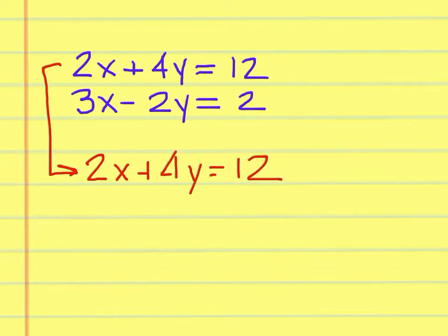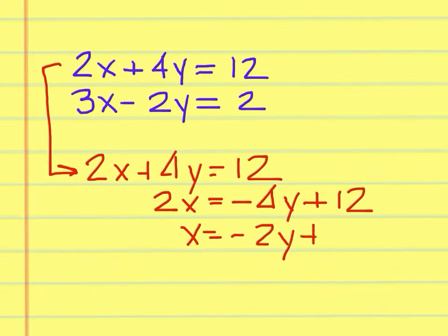I am going to get the x by itself. So I'll leave 2x on the left and move 4y to the right, changing the sign. And then divide everything by 2 to get x equals negative 2y plus 6.